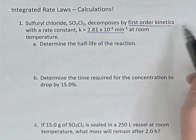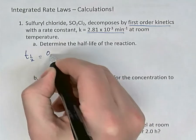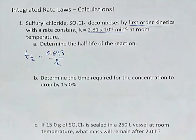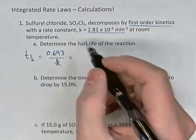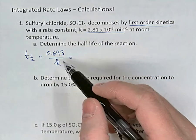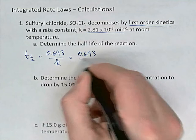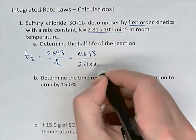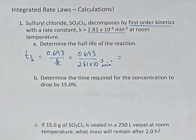We know that each of the different orders has a different equation for its half-life. The first-order half-life equation is t½ = 0.693 divided by k. Recall that 0.693 is the natural log of 2. This equation is in our data booklets, though your teacher may require you to know it. So we take 0.693 and divide by the rate constant, 2.81 × 10⁻³ per minute.